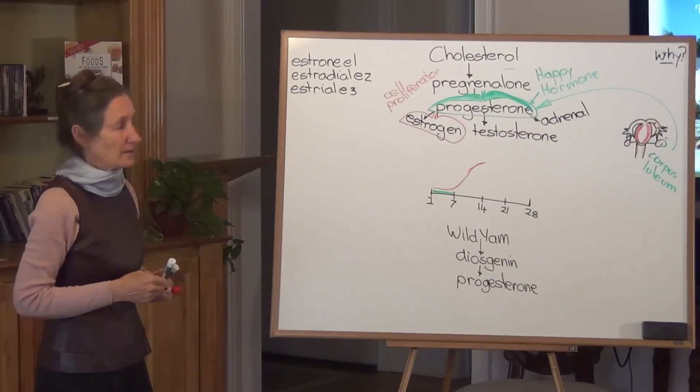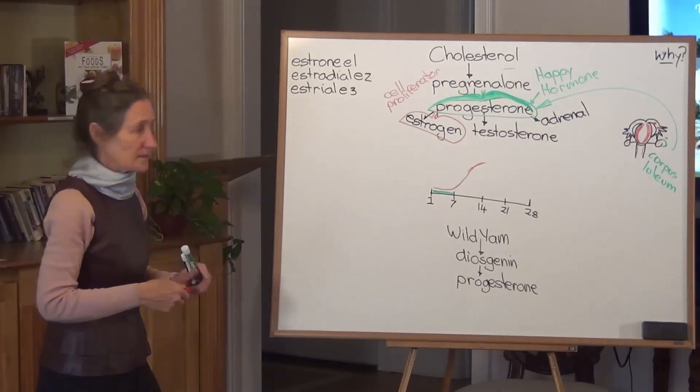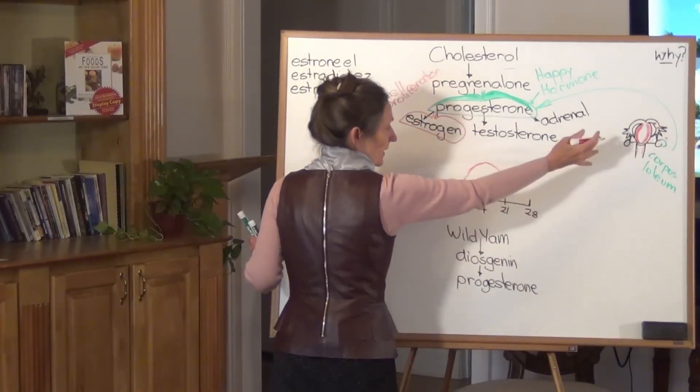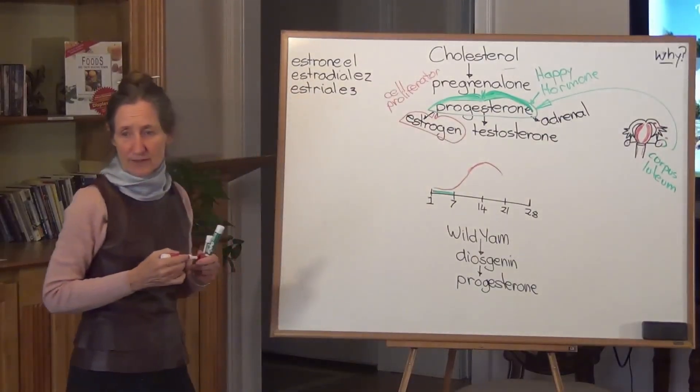So around day 14, estrogen gets the message it can go backstage because we've already got our blood nest, we've got our lubricant and our egg. There's no need for more estrogen.